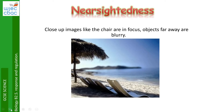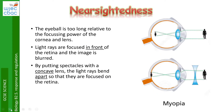If you are near-sighted, close-up images like the chair seem to be in focus but objects far away are blurry. Looking at the diagrams, we can see that this condition is called myopia. The eyeball is basically too long relative to the focusing power of the cornea and lens, so the light rays focus in front of the retina and the image is blurred.